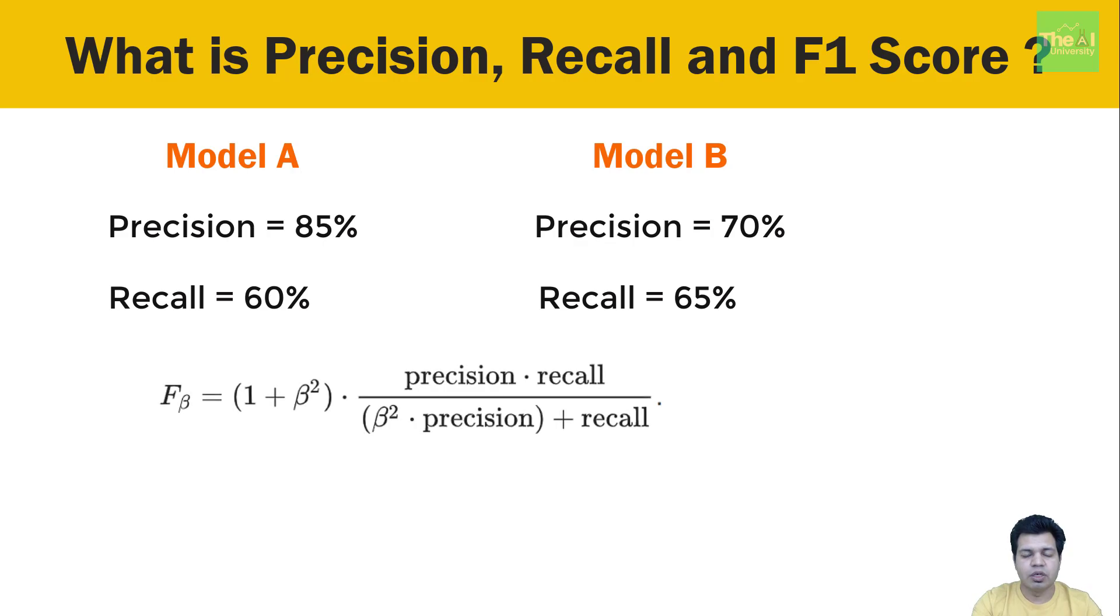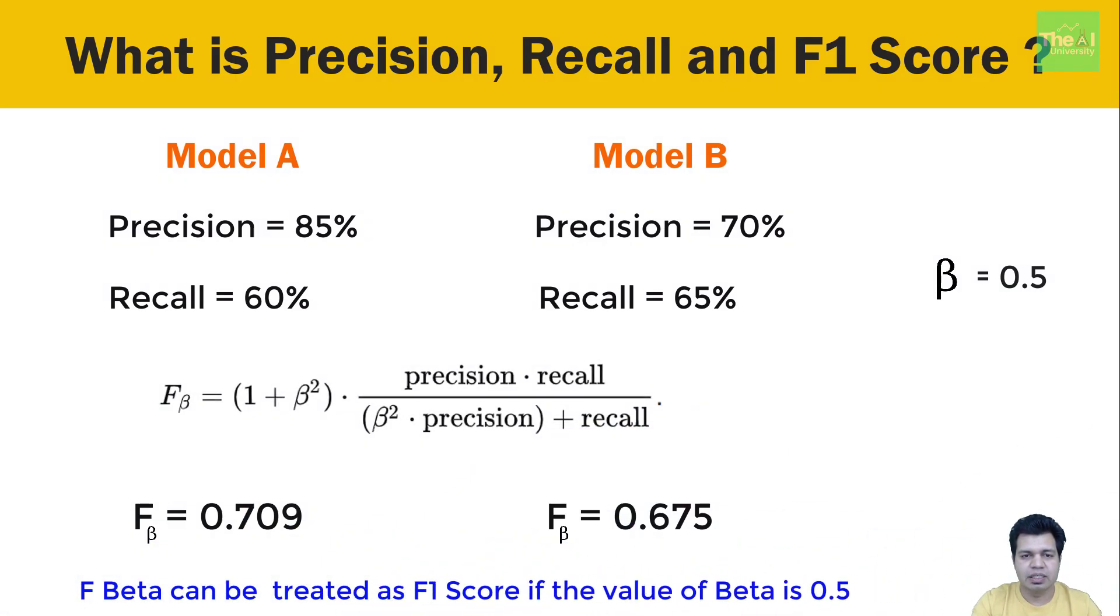Now let's go back to our problem where we wanted to see which model is performing better: the one with precision as 85% and recall is 60%, or the one with precision value is 70% and recall value is 65%. Let's keep same weight to the beta value here as 0.5 and substitute the precision and recall values in the formula given here. So model A has F-beta measure value as 0.709. For model B, the F-beta measure value is 0.675. Since the value of model A is higher as compared to model B, model A performs better. This F-beta measure can be regarded as F measure or F1 score when the value of beta is 0.5, that is when the value of precision and recall contribute equally to determine model performance.